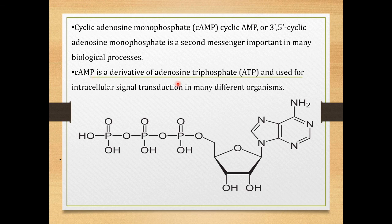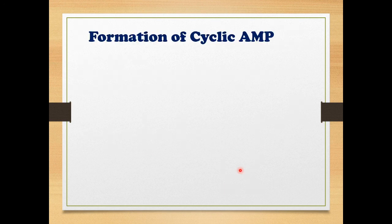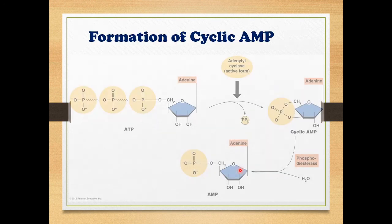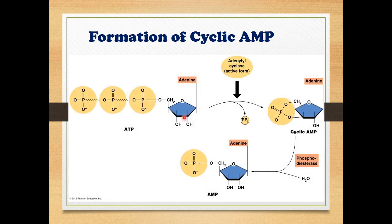Cyclic AMP is produced from, or derived from, adenosine triphosphate (ATP). In ATP, there is an adenine nitrogen base, a ribose sugar, and three phosphate groups — hence adenosine triphosphate. Now let's look at how cyclic AMP is produced from ATP.